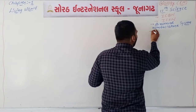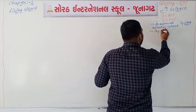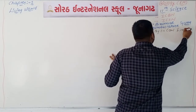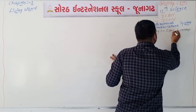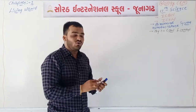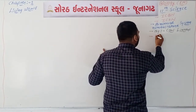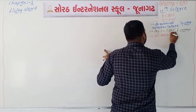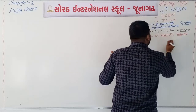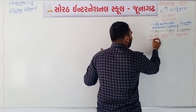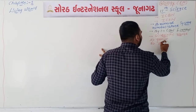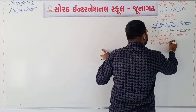The binomial nomenclature system was accepted and you should remember the name Carolus Linnaeus. According to binomial nomenclature, the scientific name of any living organism is made up of two parts: the first name is the genus name and the second name is the species name.